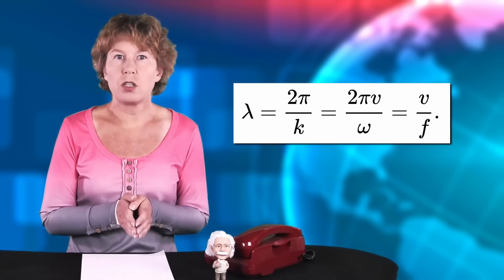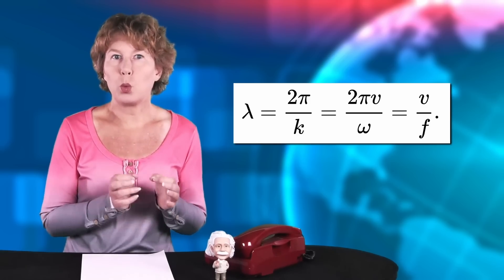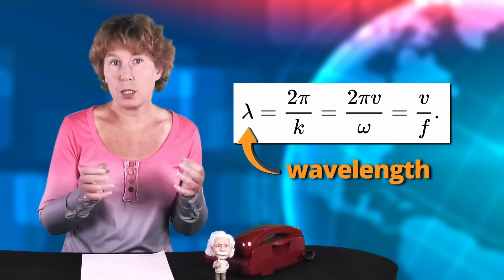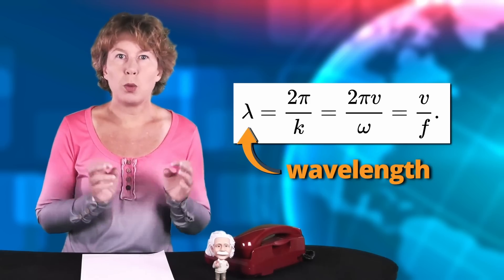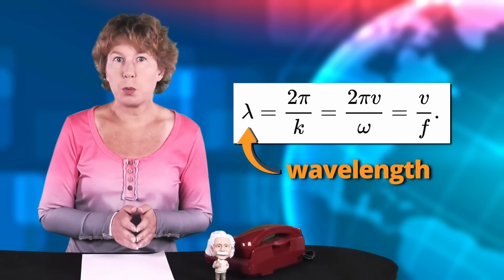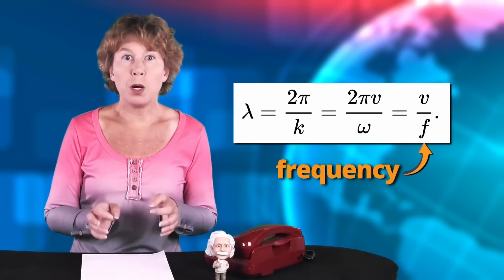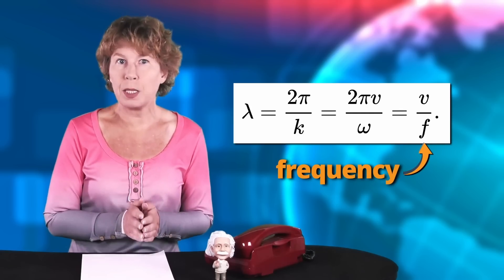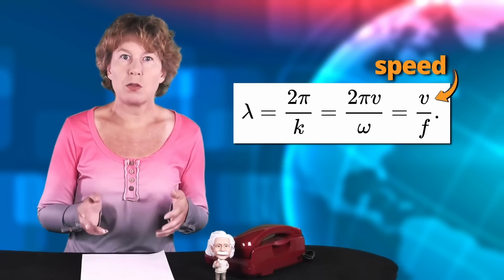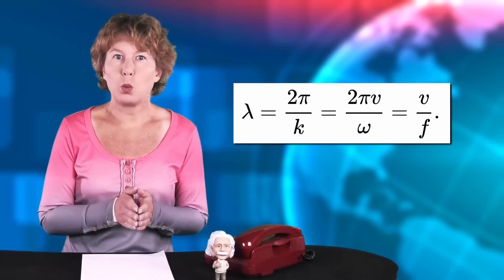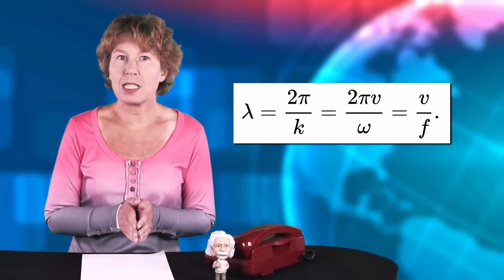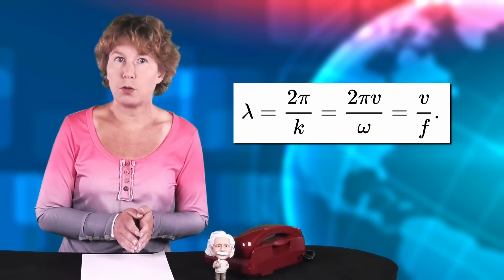Because the resolution of an image depends on the wavelength of the wave that you're probing it with. And the wavelength is inversely proportional to the frequency, but proportional to the speed of the wave. Since sound is so much slower, this means that the wavelength at a given frequency is much smaller than for light.